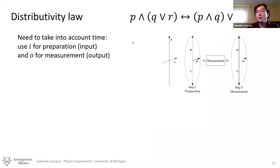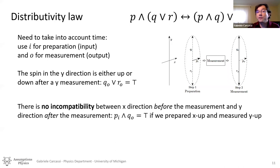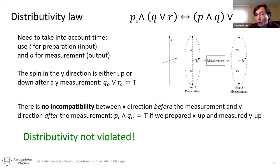What you would say is that there is temporal ordering — P is at a certain time and Q and R are at a later time after we open the hatch. So what we should do is take into account the temporal ordering in quantum mechanics as well. We put a qualifier I for input (preparation) and O for output. What we find is that yes, the Y direction is either up or down after the measurement, so Q or R equals true. But there is no incompatibility between the X direction before the measurement and the Y direction after the measurement. If you qualify all these statements with the appropriate I's and O's, you will find that the distributive law is not violated.